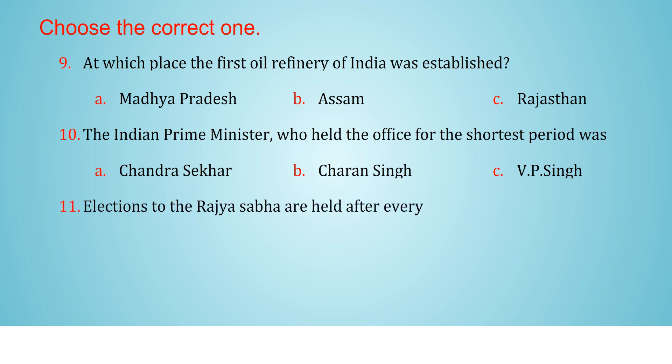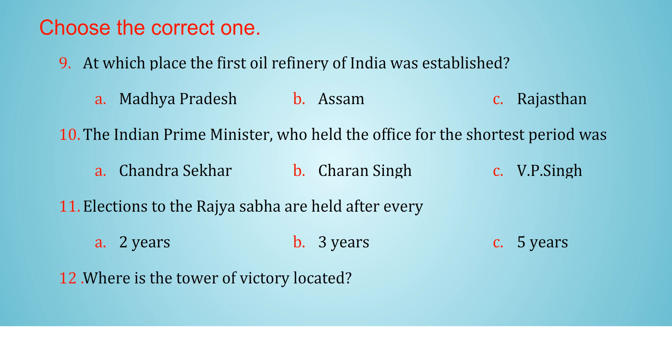11. Elections to the Rajya Sabha are held after every a. 2 years b. 3 years c. 5 years. 12. Where is the Tower of Victory located? a. Jaipur b. Chittur c. Udaipur